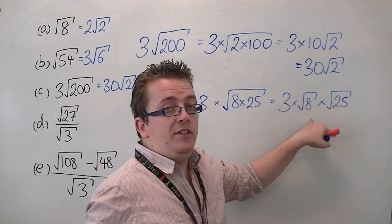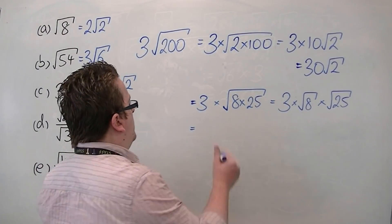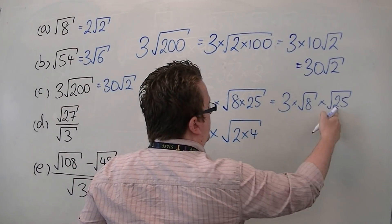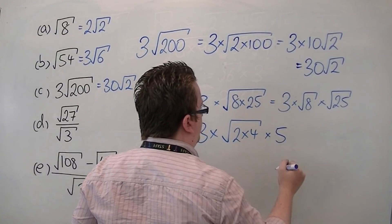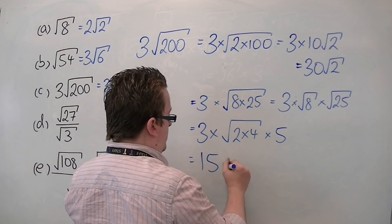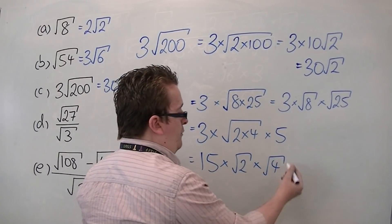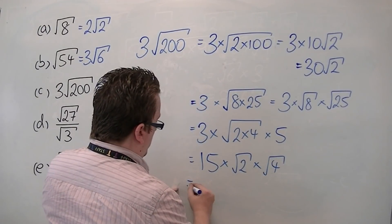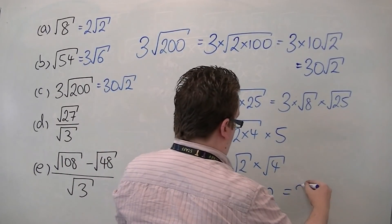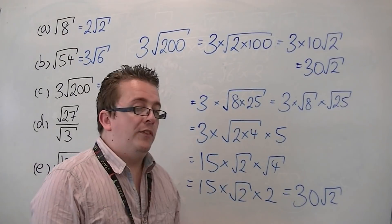Now, root 8, you'll notice, well, 8 can be written as 2 lots of 4. So that's 3 times the square root of 2 times 4, and the square root of 25 is 5. So I can now write that as 3 times 5 is 15 times the square root of 2 times the square root of 4. Square root of 4 is 2, so that's 15 times root 2 times 2, which makes 30 root 2, because 15 times the 2 makes the 30.